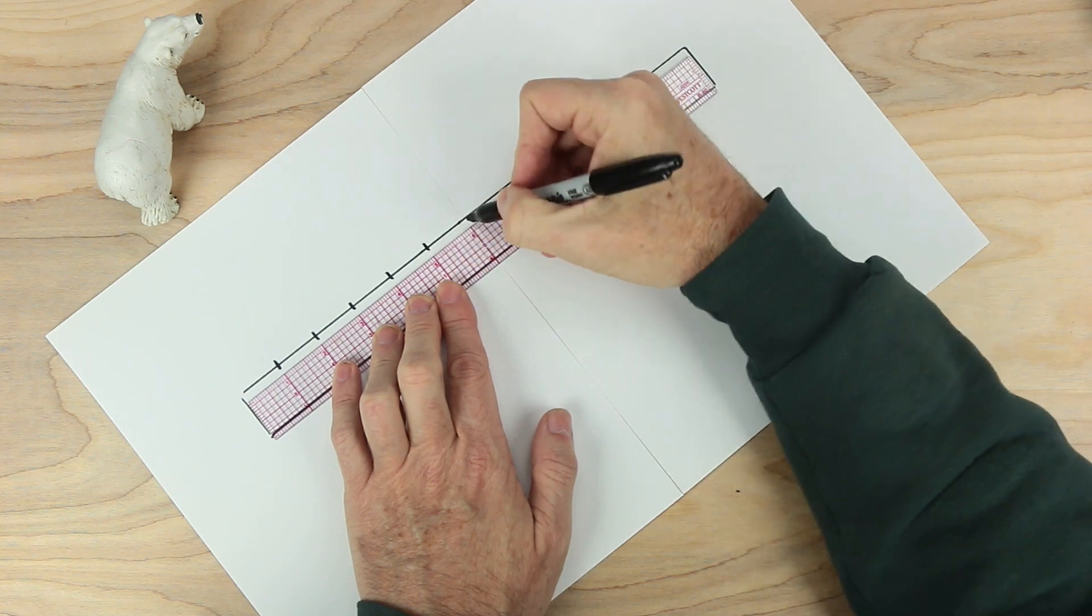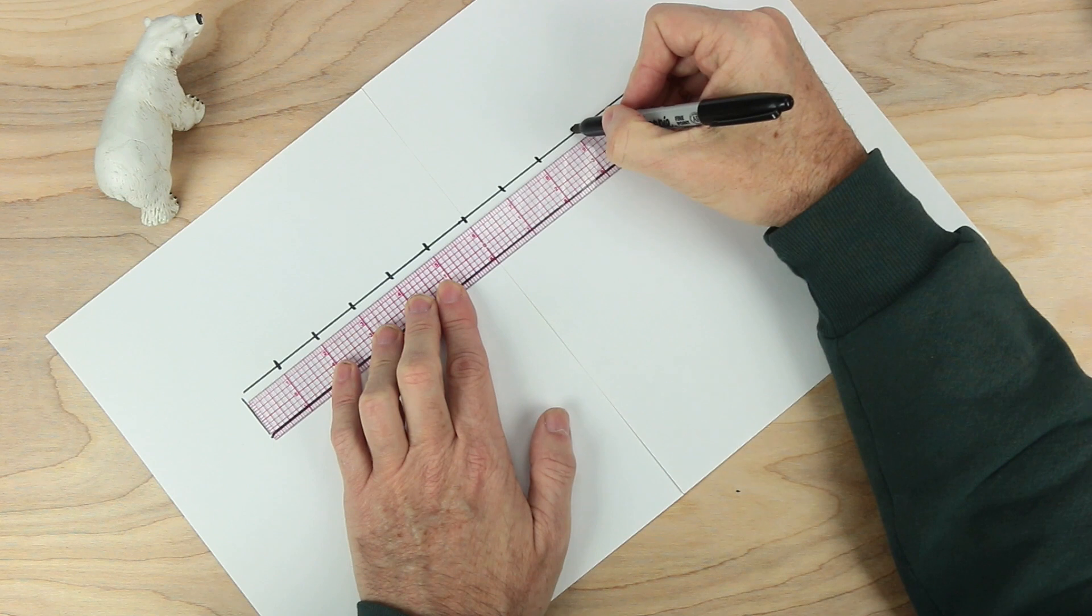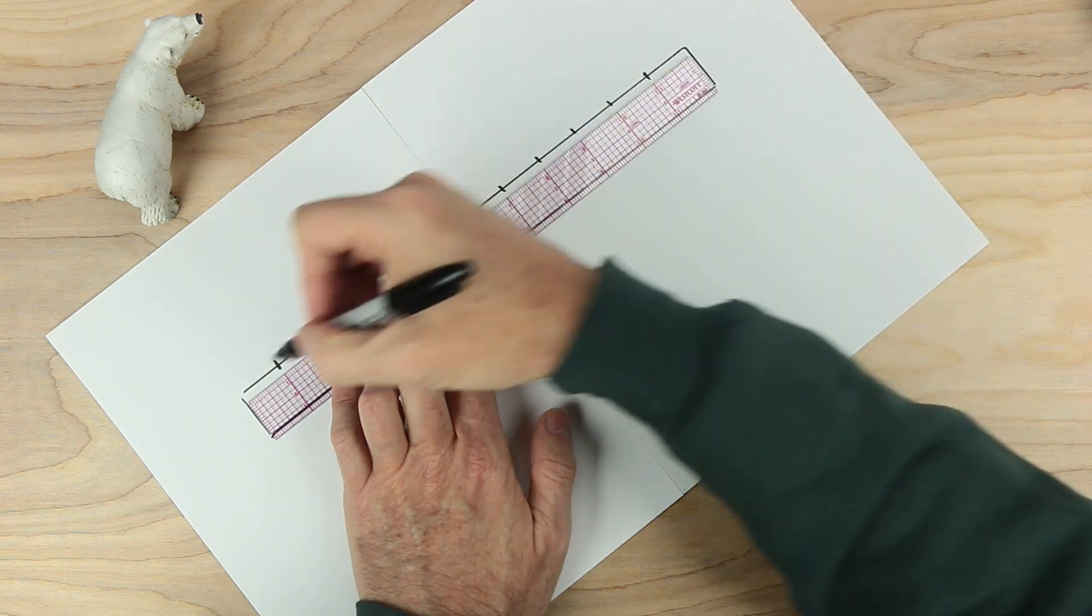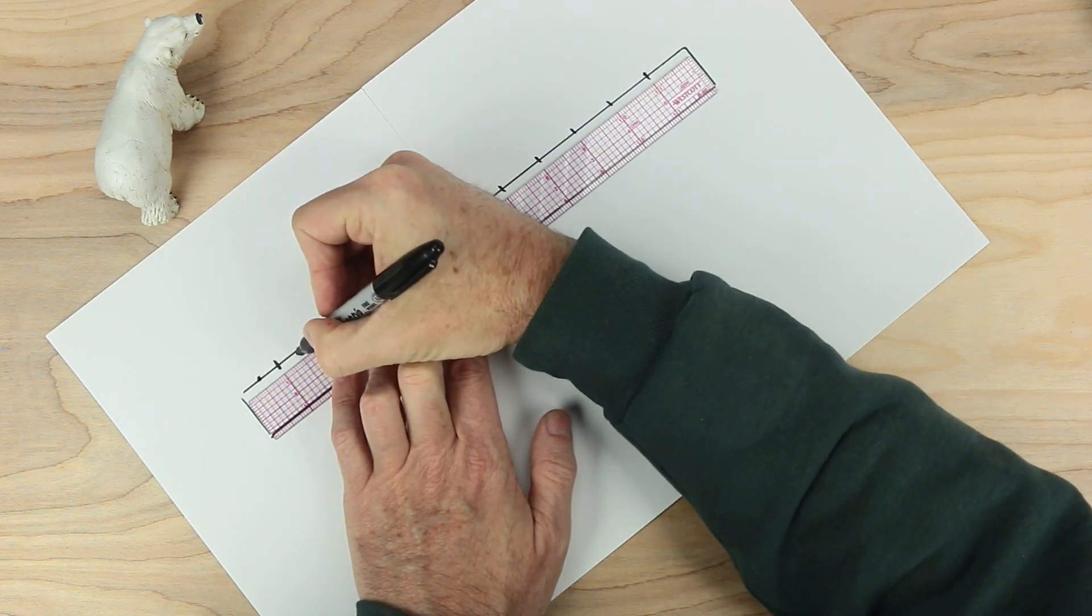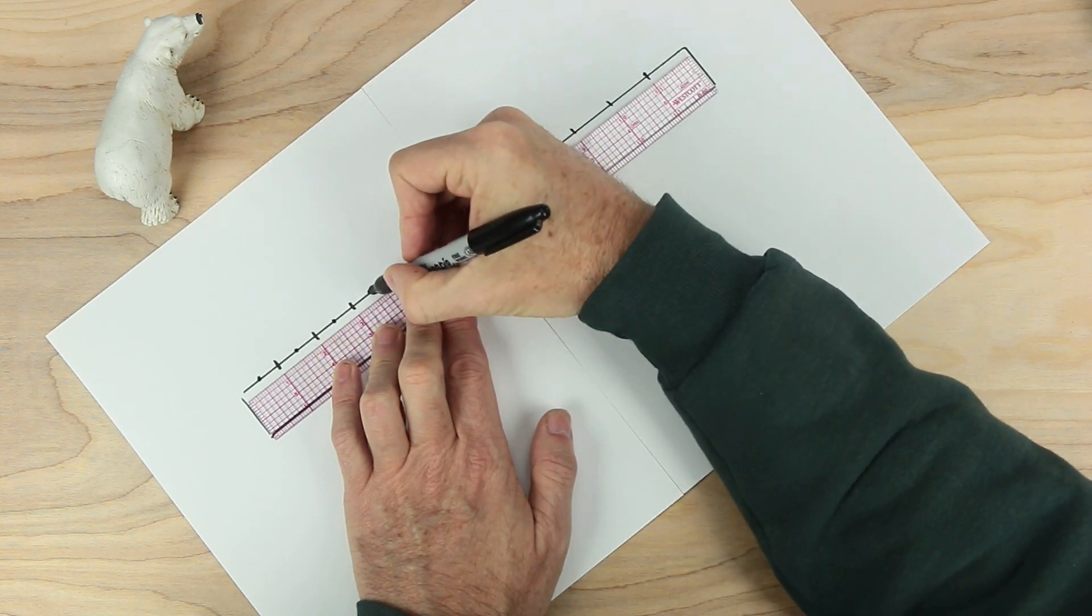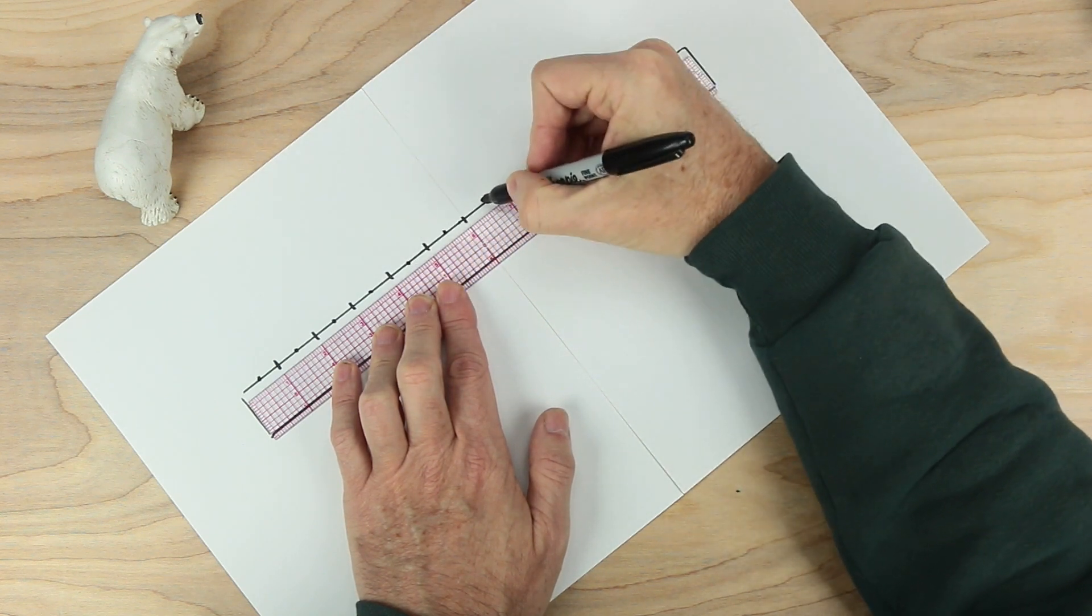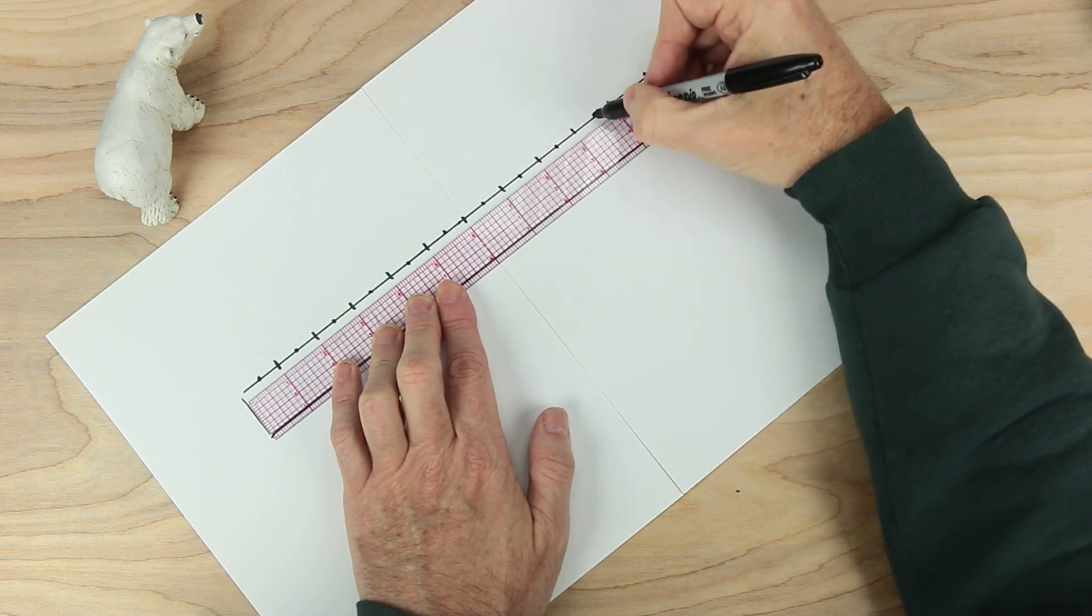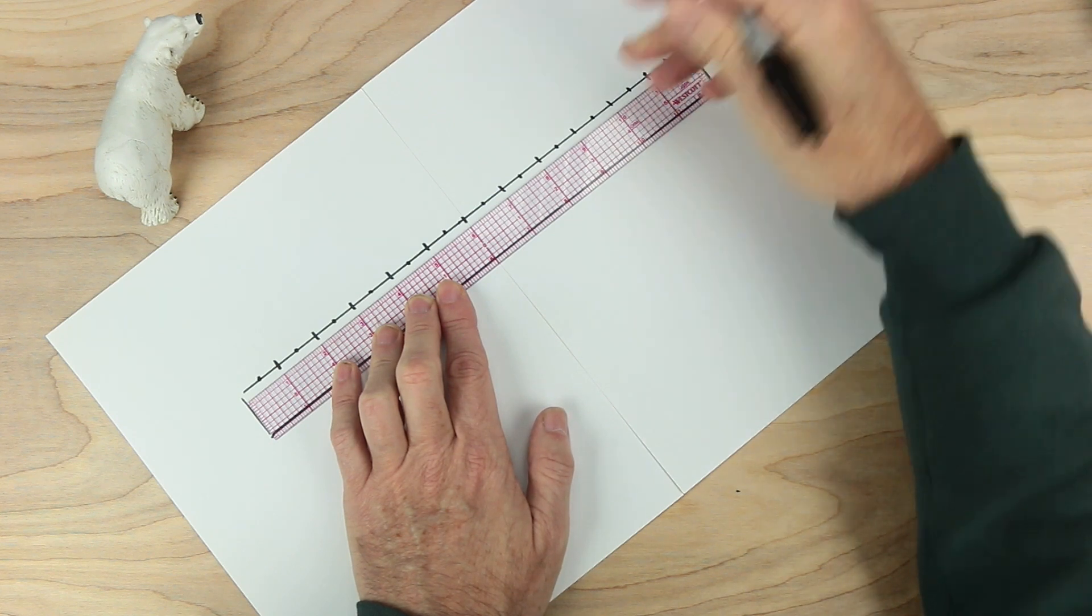Four, five, six, seven, eight, nine, ten, eleven. There's already one at twelve. Let's put a dot at every half measure. Halfway between the zero and the one, one and a half, two and a half, three and a half, four and a half, five and a half, six and a half, seven and a half, eight and a half, nine and a half, ten and a half, and eleven and a half.